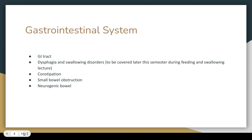Untreated constipation can lead to potential surgeries or the need for a stoma — a bowel opening created in the abdomen. Making sure clients are having regular bowel movements is the moral of the story. The other issue is neurogenic bowel, which is directly related to some sort of nerve impairment.